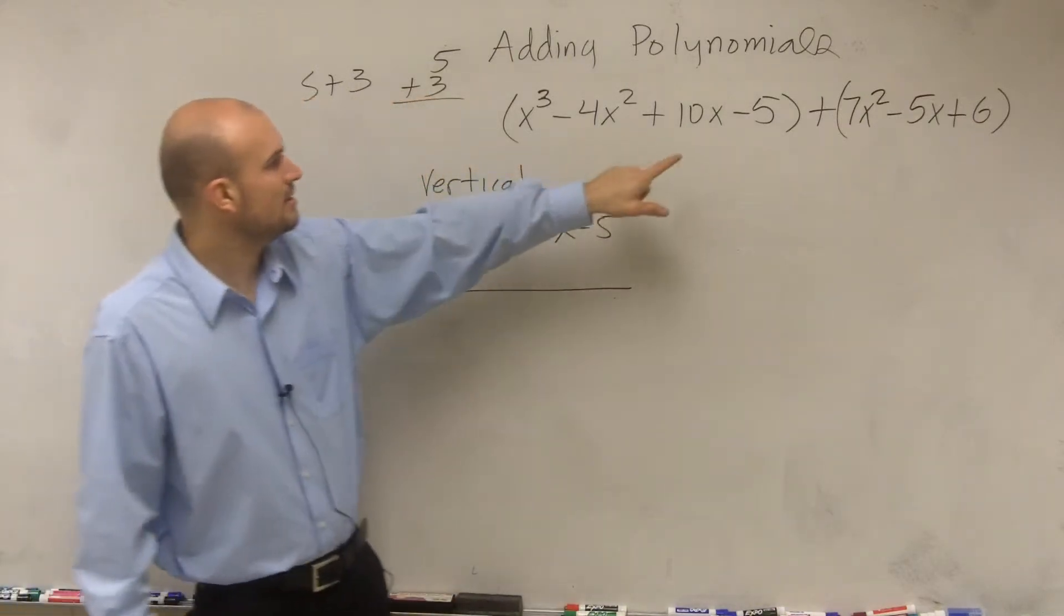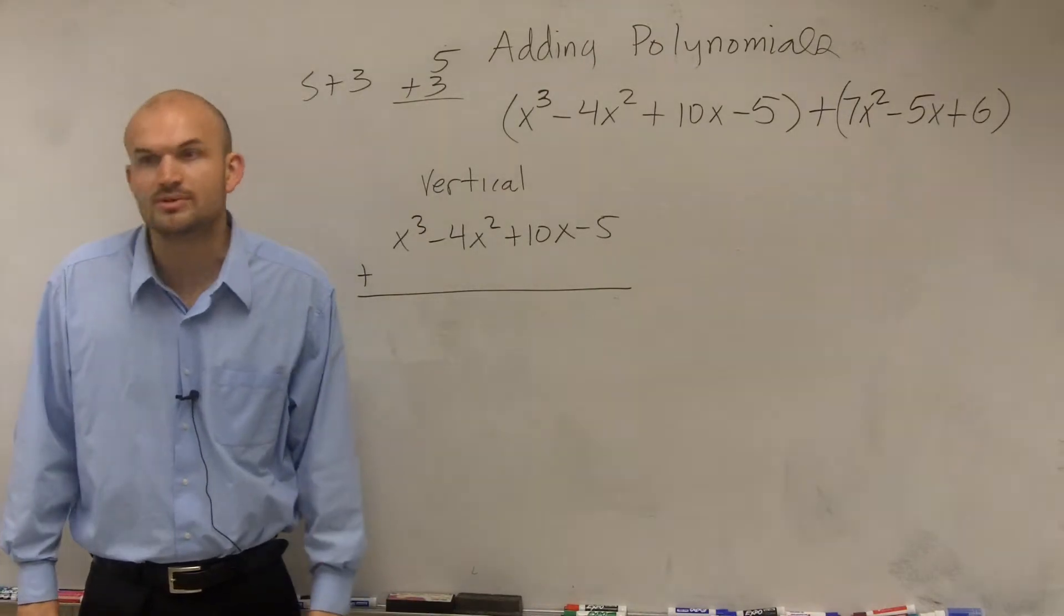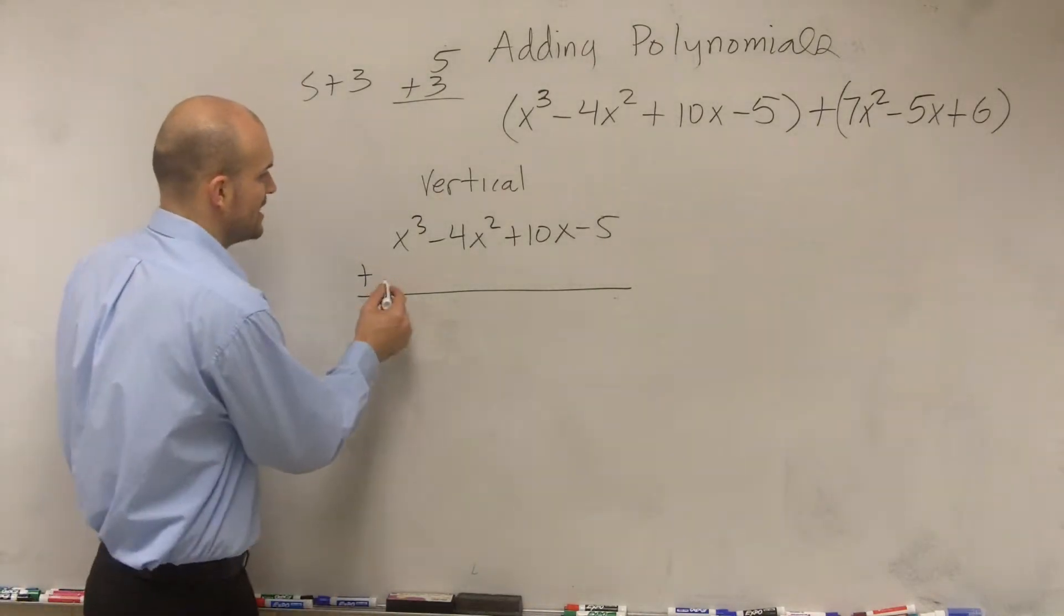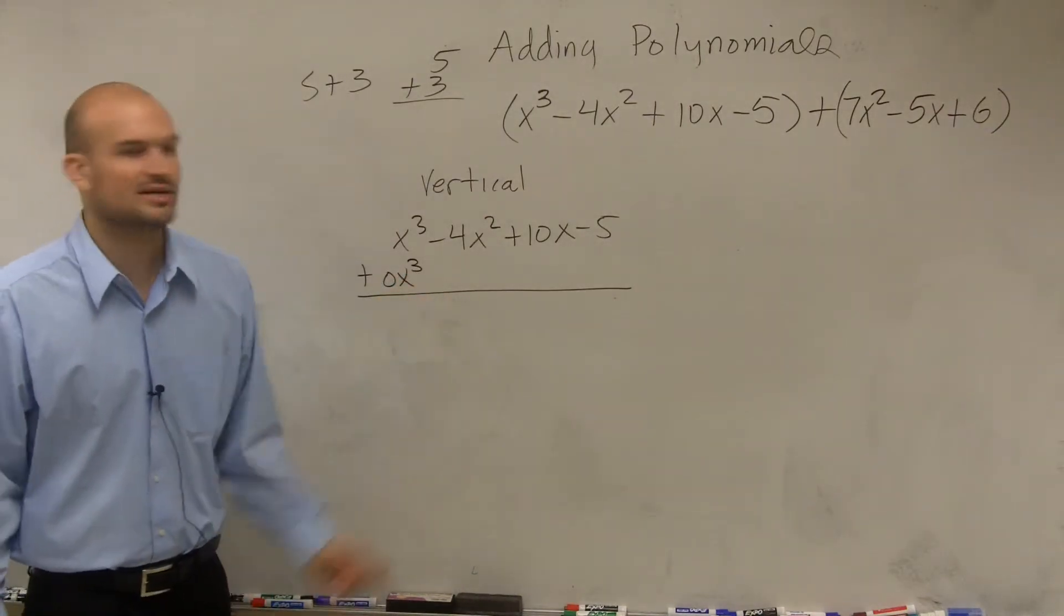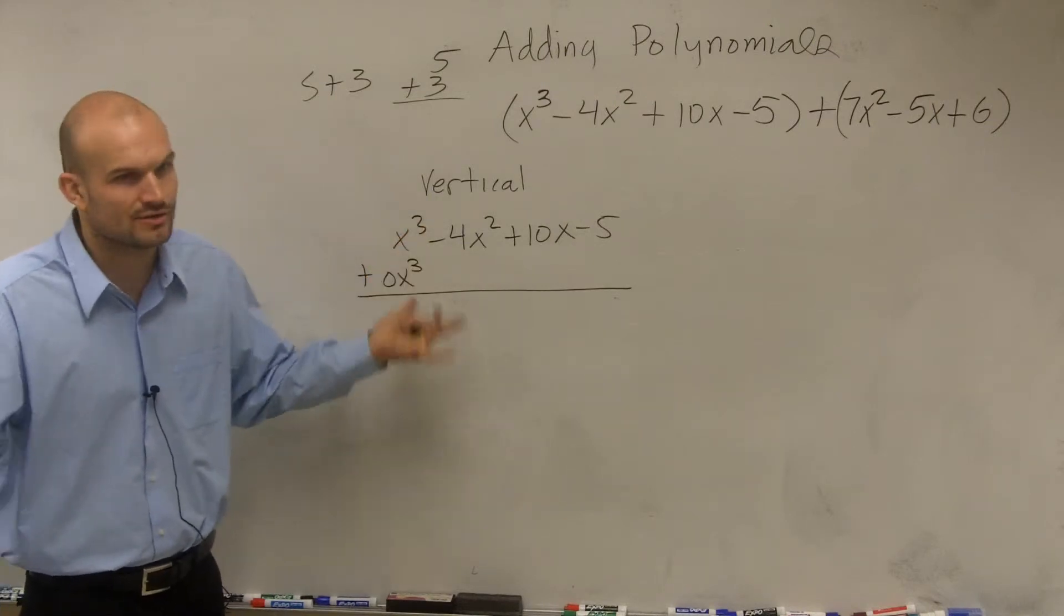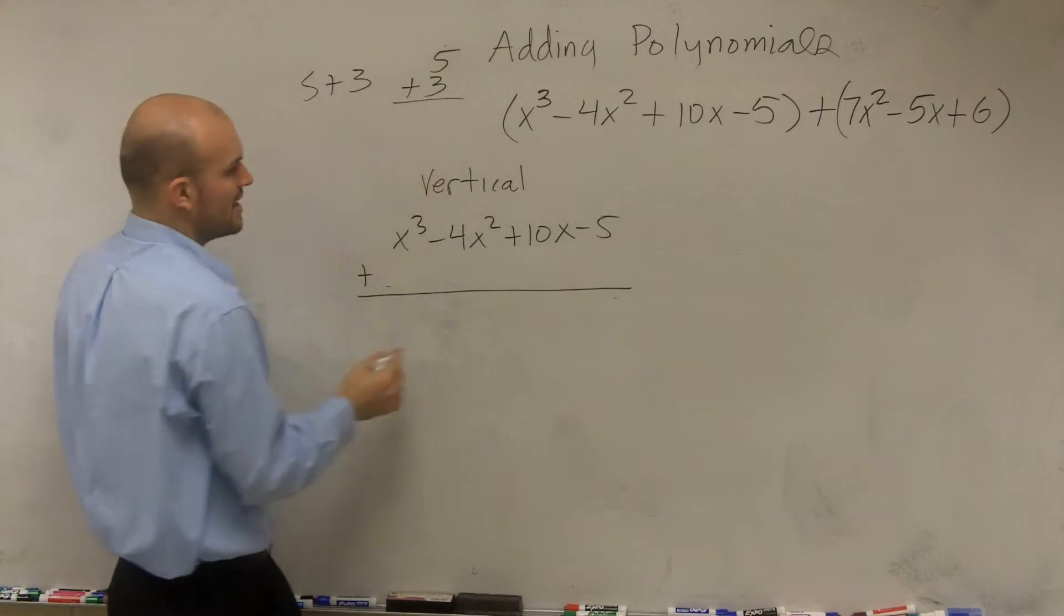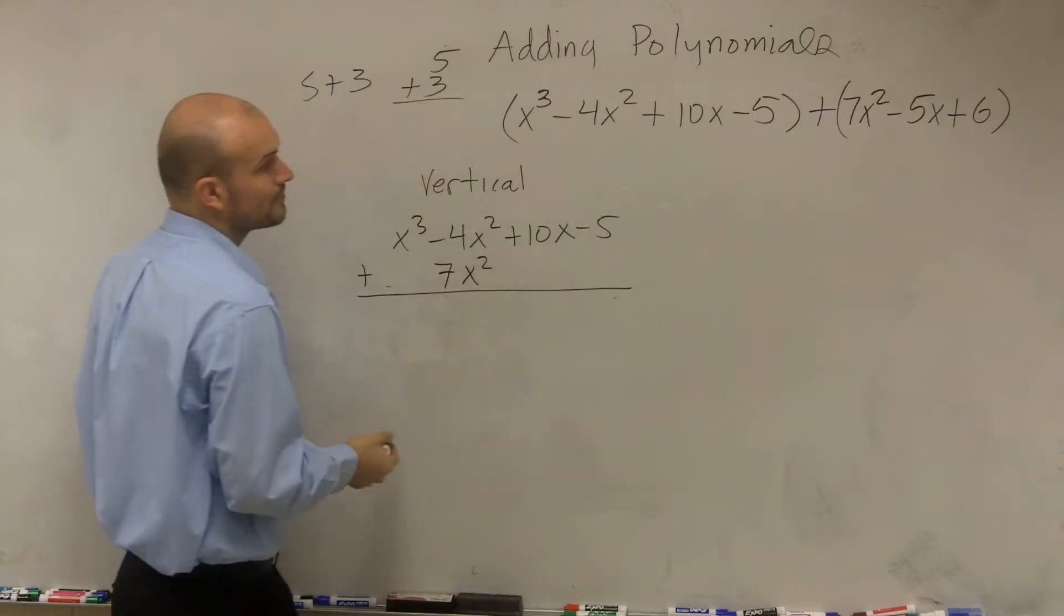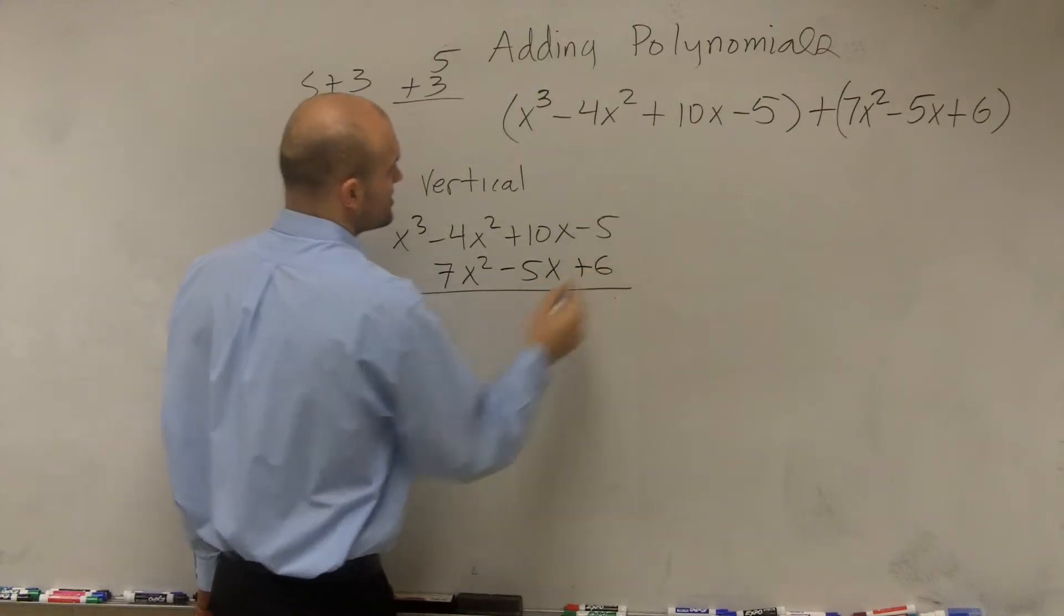Do we have any other term that has x³, the same variable factors? No. So you could either say it's going to be 0x³, or a lot of times you just don't write anything there because 0x³ is 0. And x³ plus 0 is just x³. So I won't write it in there. But then we have plus 7x² - 5x + 6.